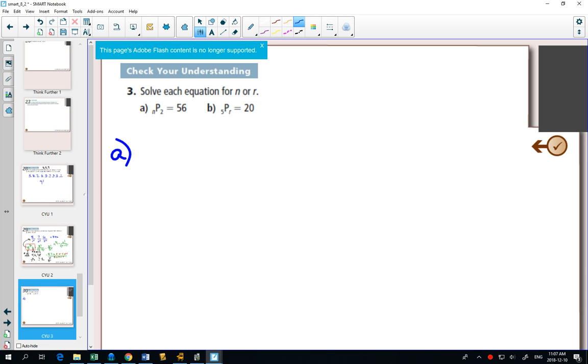An algebraic solution would say you need to use your formula, and our formula here would have n factorial in your numerator and n minus 2 factorial in your denominator equals 56.